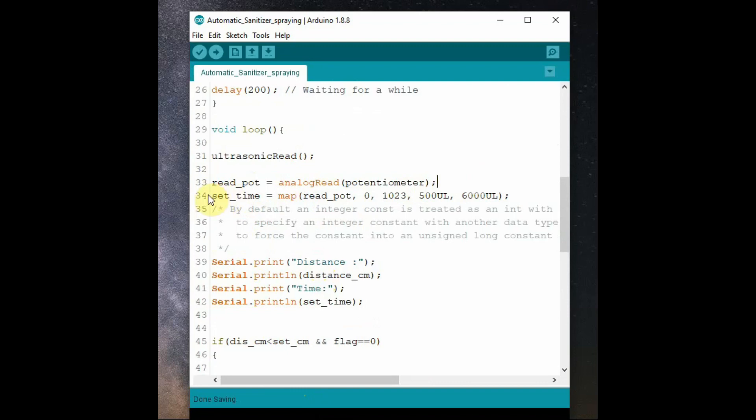Generally the potentiometer value is from 0 to 1023, it is mapped to 500 to 6000. Notice the usage of UL, that is the unsigned long calculation of time. This is a general notation of UL suffix. We can adjust from 0.5 to 6 seconds. If you want to change the timing you change it here in the code.